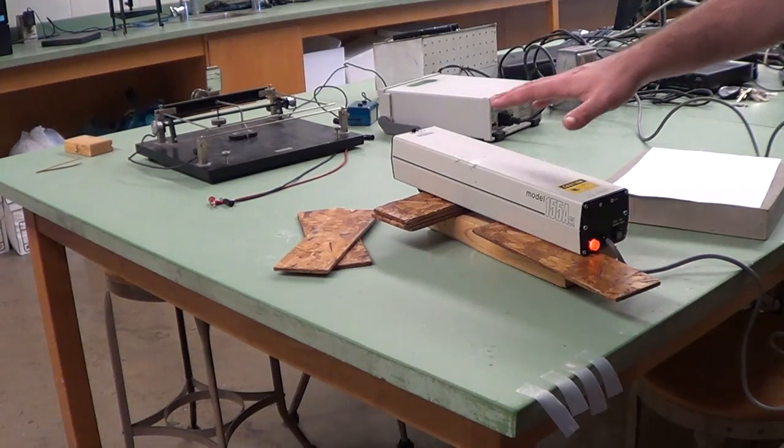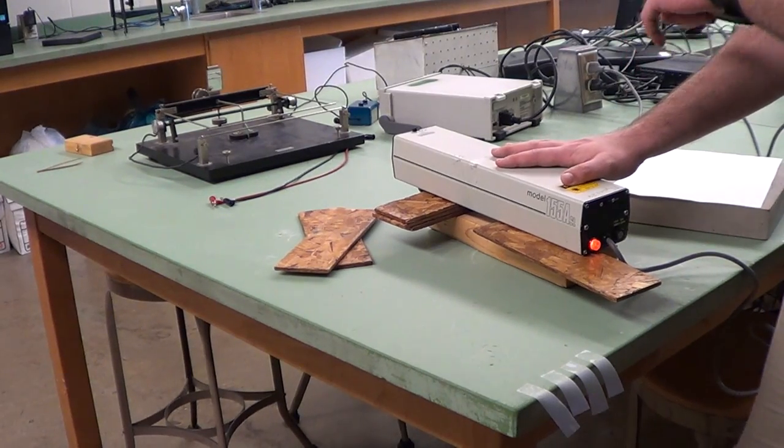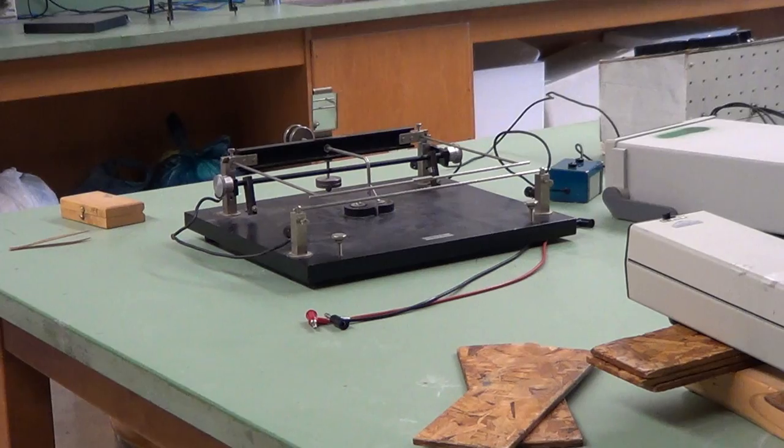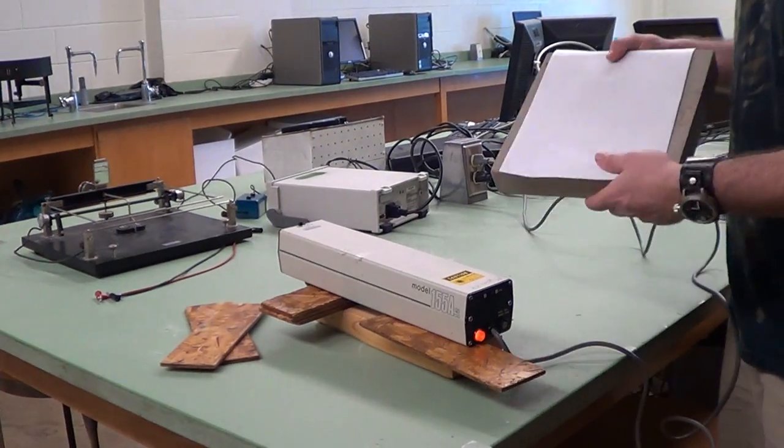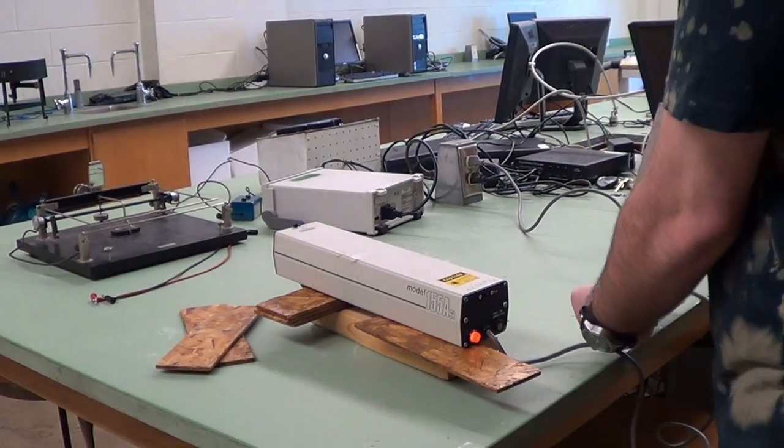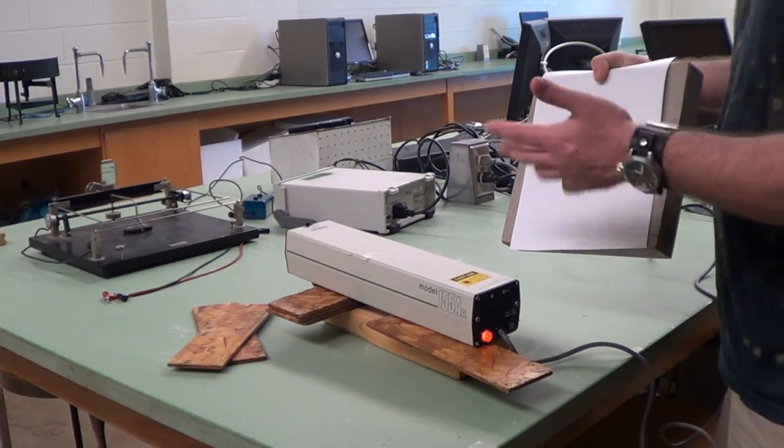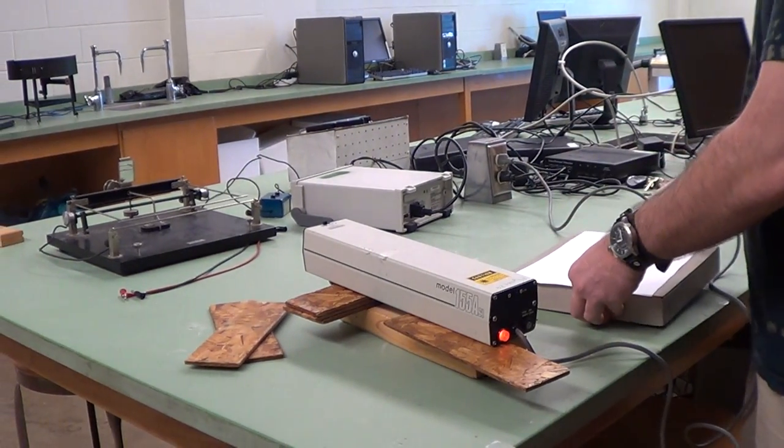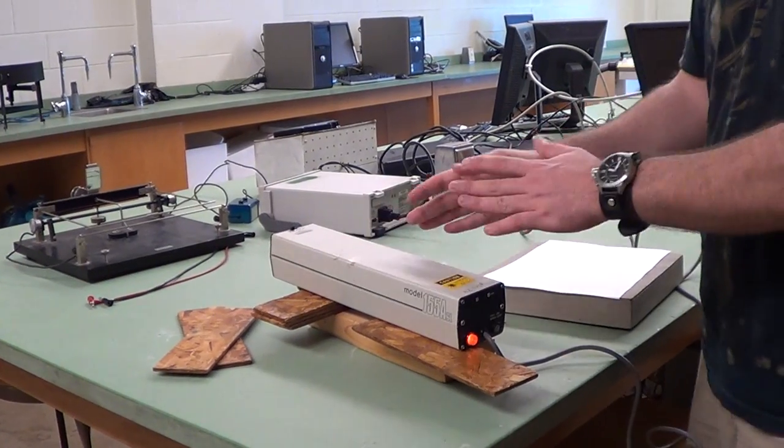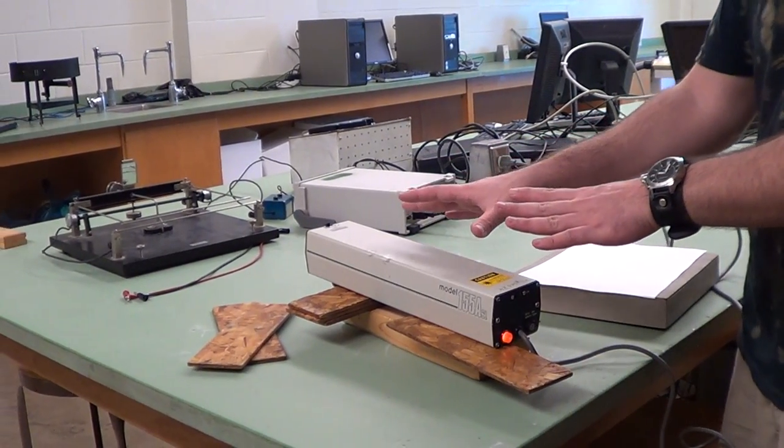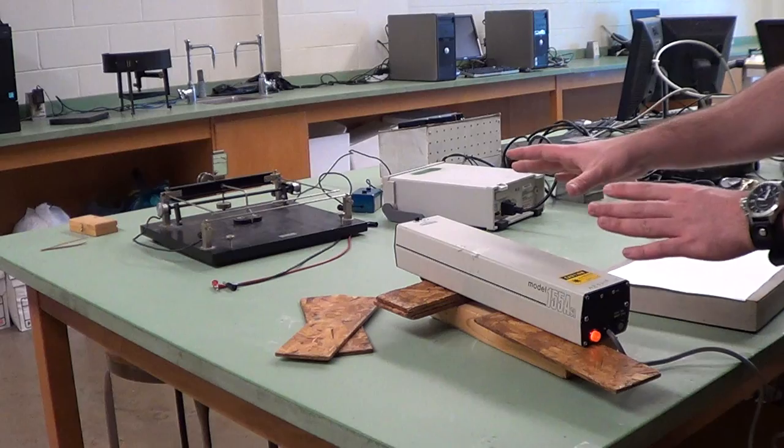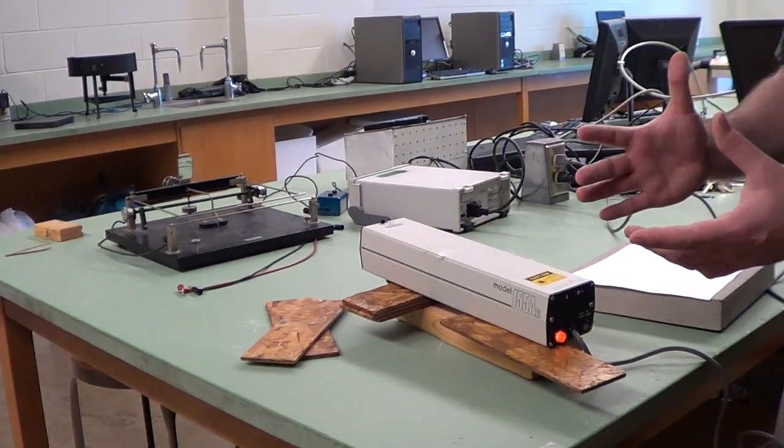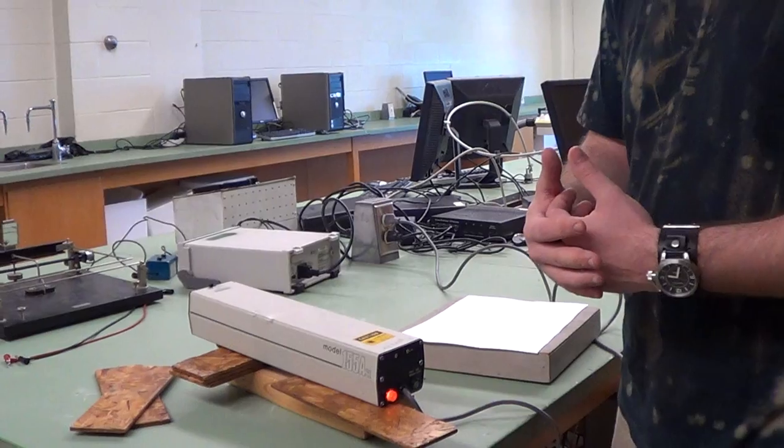So over here we have the laser that we're going to be using for this experiment. Remember the mirror we talked about earlier? The way this is going to work is we're going to bounce the laser off the mirror and then onto a backstop that we'll set up wherever the laser beam is hitting. Then we can mark where the beam is hitting on the backstop so we can perform the experiment. A quick note about the laser is although these lasers probably won't blind you, it's still possible. So make sure you always know where your beam is going and if you need to pick something up off the ground, cover your eyes before you bend over.